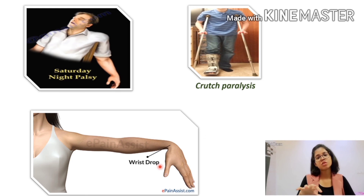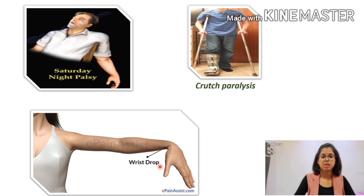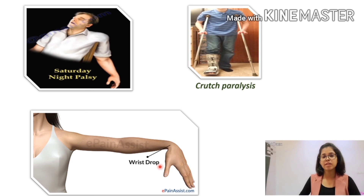Wrist drop causes loss of extension at the wrist, and the person will face difficulty in gripping objects because there will be no synergistic action of the extensors at the wrist. This was all about the radial nerve. My next video will be on the axillary artery. Thanks for watching.